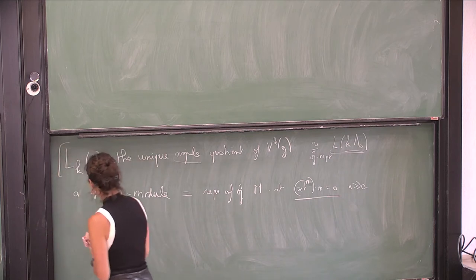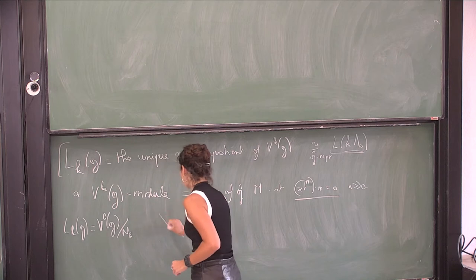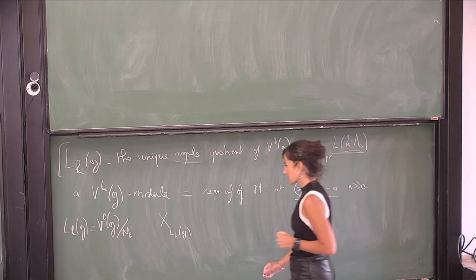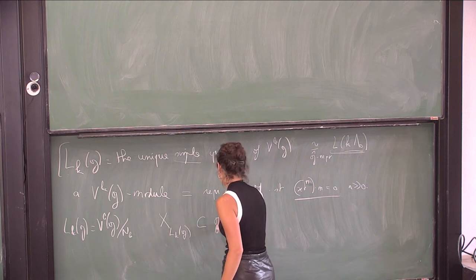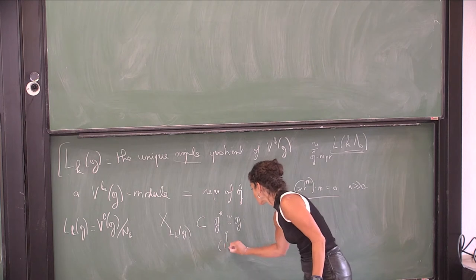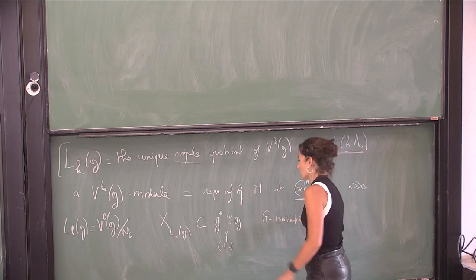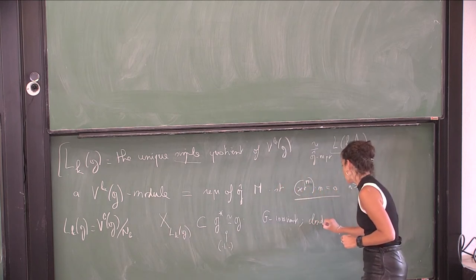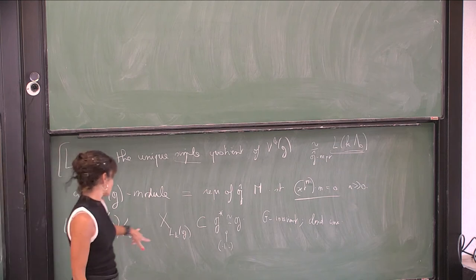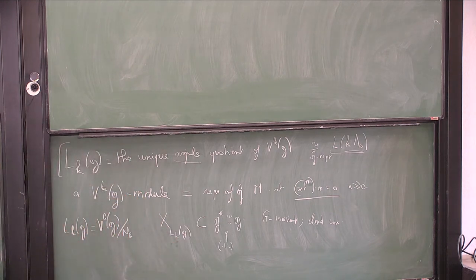So we consider this quotient and ask what is the associated variety. This is in general very hard to compute, but because of this quotient one can show it is a subvariety of g-star — identified with g using the scalar product. It is Poisson by construction, G-invariant, closed, and conical. We can compute it only for some particular levels k, so I would like to give examples.